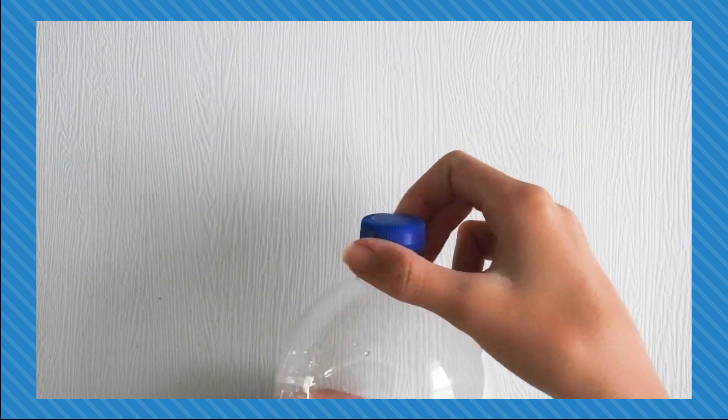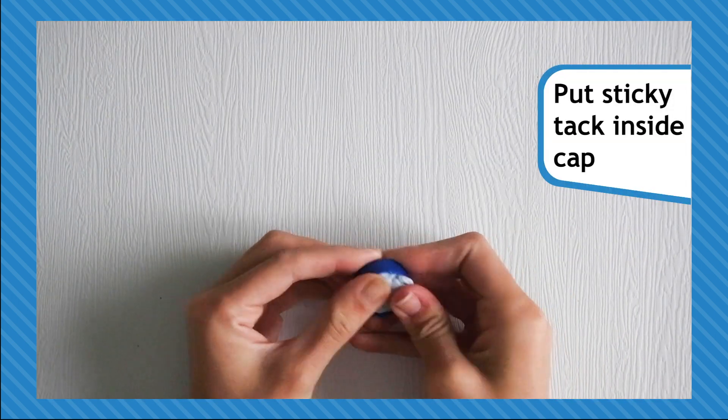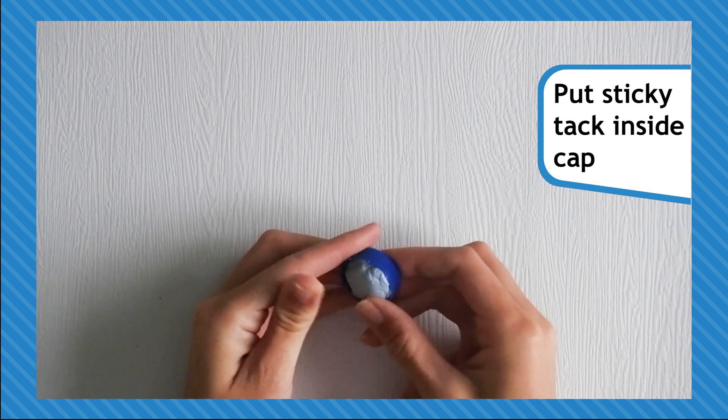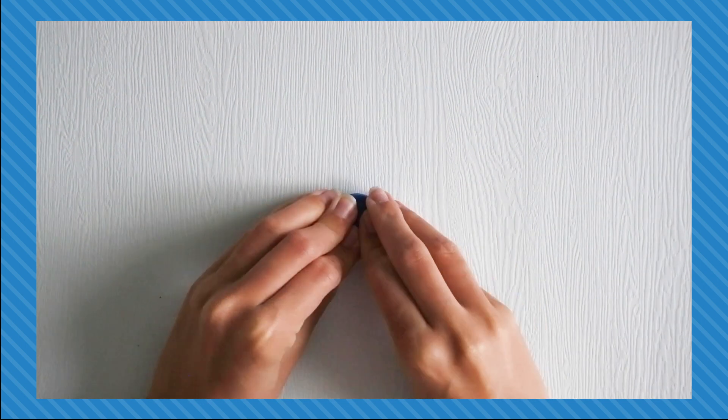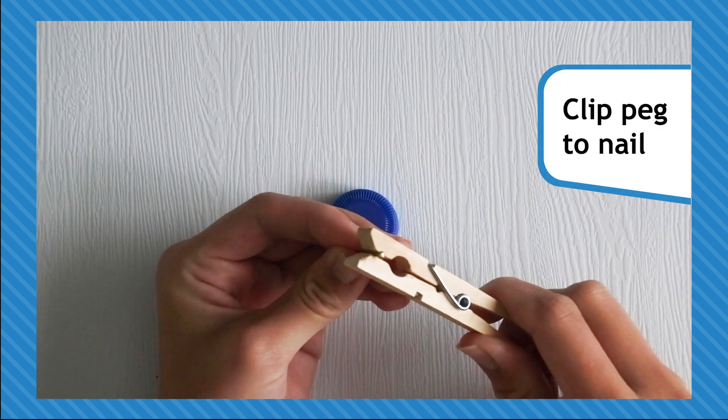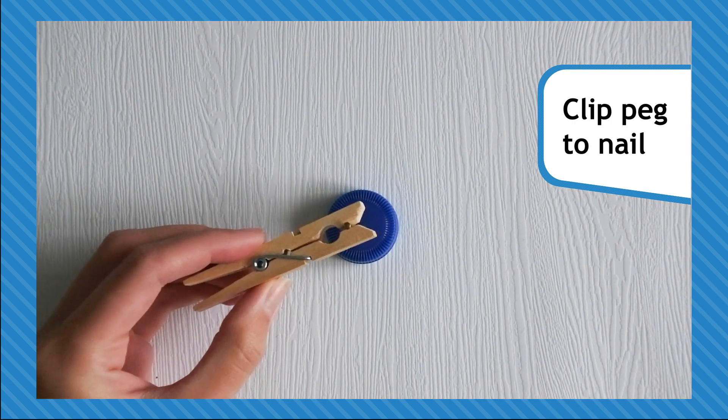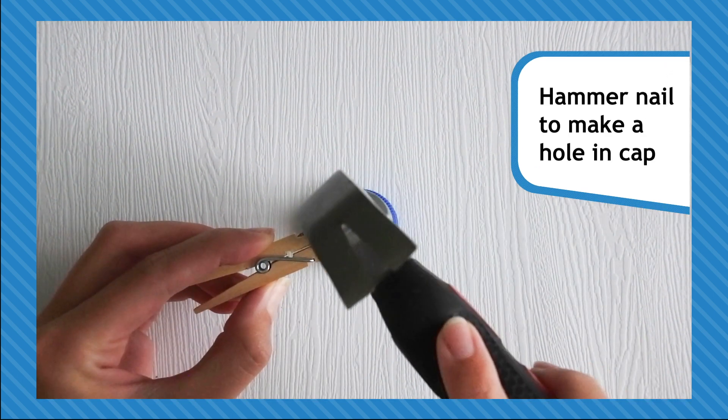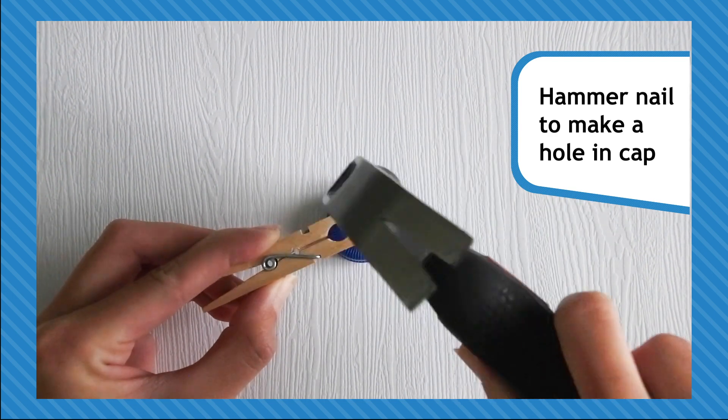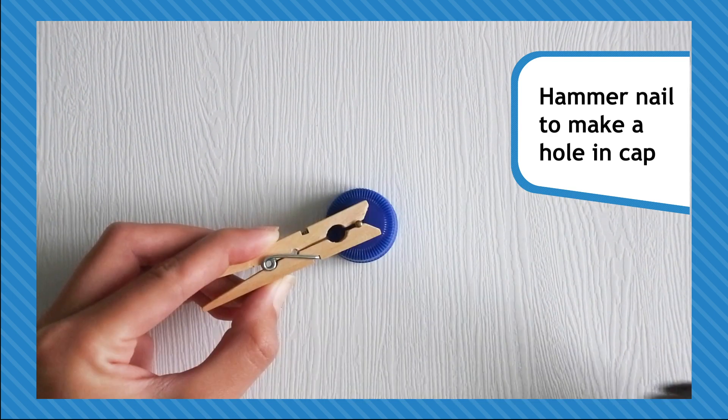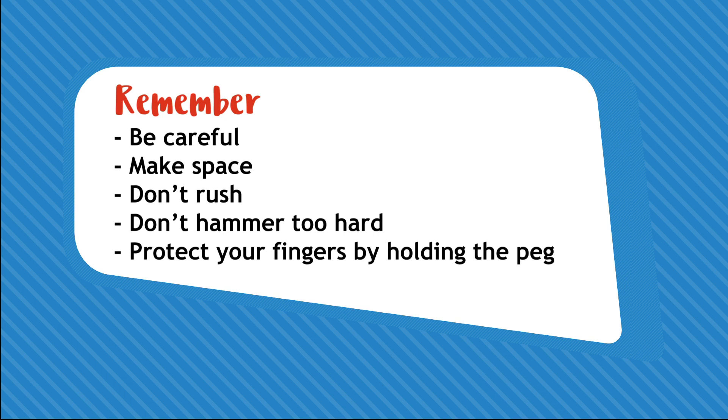Unscrew the bottle cap from the top of your first bottle and put a large piece of sticky tack inside it. Stick it to the table or the floor. Clip the peg to the nail and hold it in place in the center of the cap. Gently hammer the nail until it makes a hole through the cap. Remember to be careful when using a hammer.